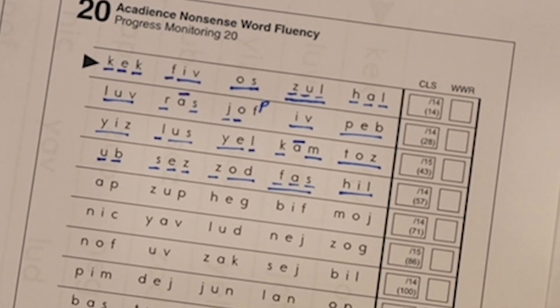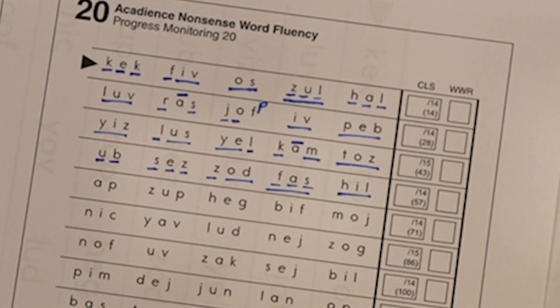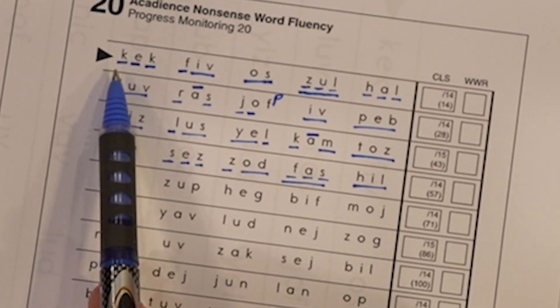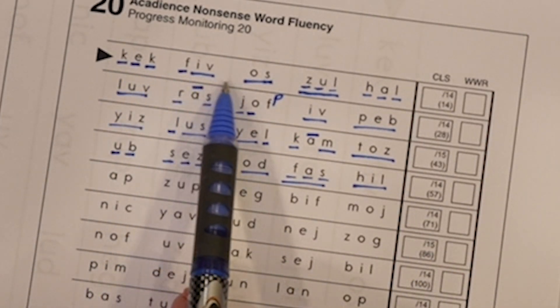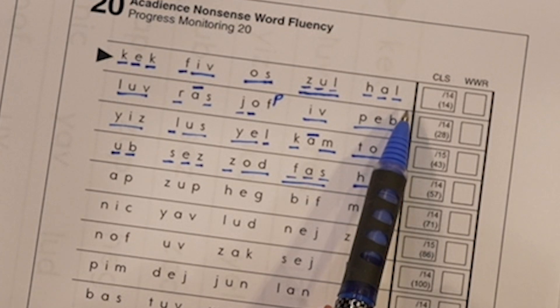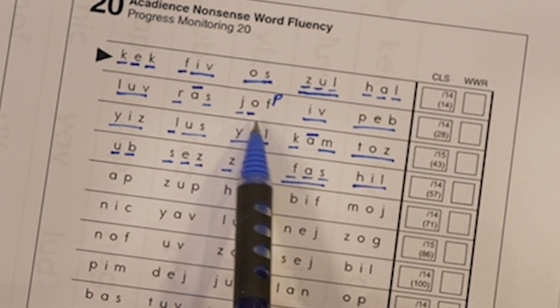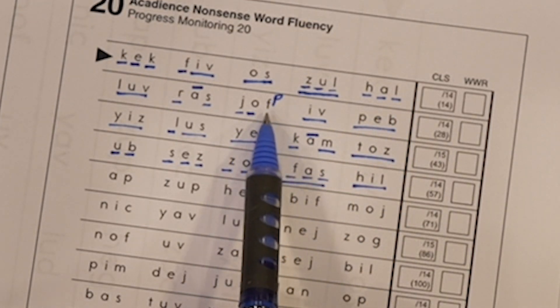So first, let's look at the correct letter sounds. That's did they correctly identify it. So they said all correct letter sounds here. Like this one here in line two, they said a P instead of F. That is not a correct letter sound.